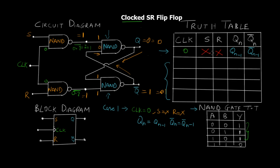If by mistake S or R gets flipped, even then the output is always going to be the previous state because clock is zero. This is how we have control over the SR flip-flop using the clock - it turns on only when we want it to be on. When we want it active, we make the clock one, so let's see what happens when clock is one.